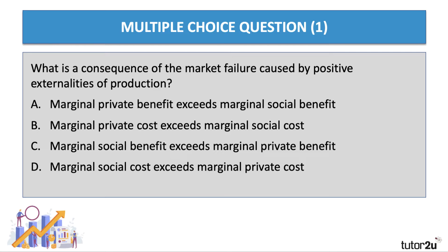Here's our first question. What is a consequence of the market failure caused by positive externalities of production? Have a go at question one. Well, positive production externalities are the external spillover benefits to other suppliers, which means that their costs are lowered. Lower costs in production — so the right answer here is marginal private cost is greater than social cost.